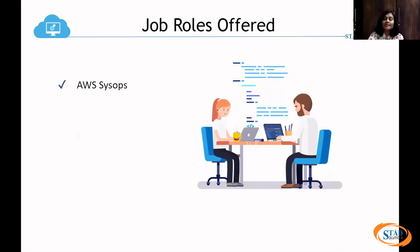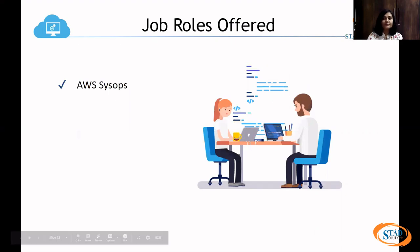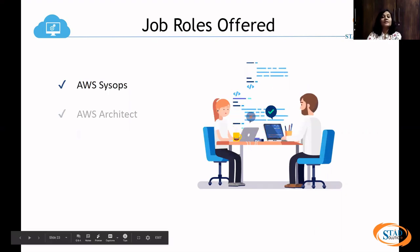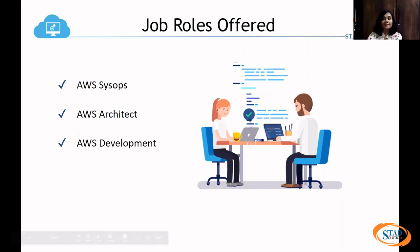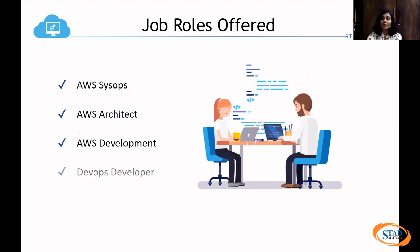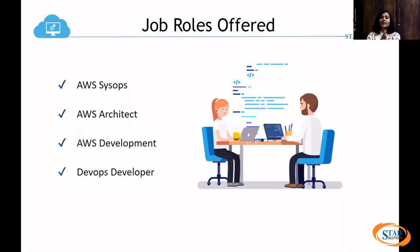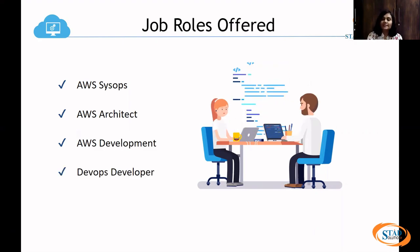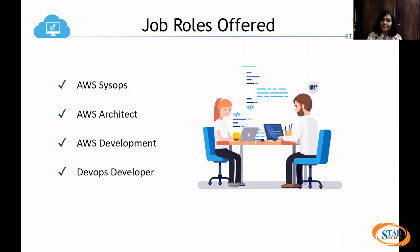The first is AWS SysOps, second is AWS Architect, third one is AWS Development, and fourth one is DevOps Developer. These profiles are very commonly used job profiles in AWS.